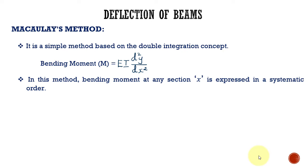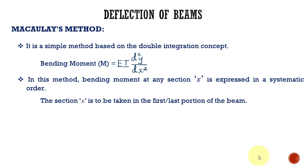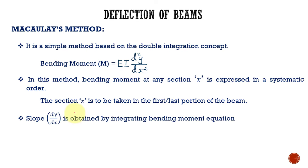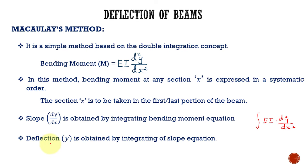In this method, the bending moment at any section x is determined in a systematic order. The section x should be taken either in the first or the last portion of the beam. The slope dy/dx is obtained by integrating the bending moment equation. Again, by integrating this slope equation, we can get the deflection of the beam. That is why we say that it works based on the double integration concept.